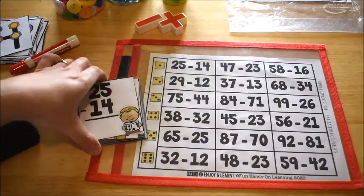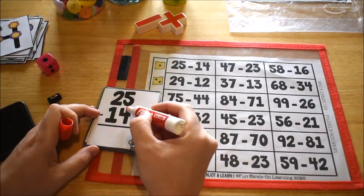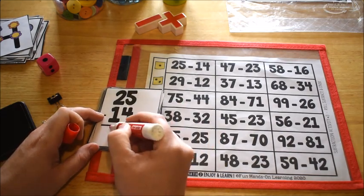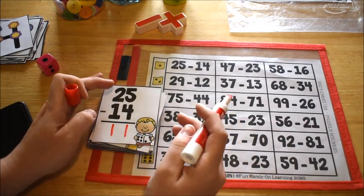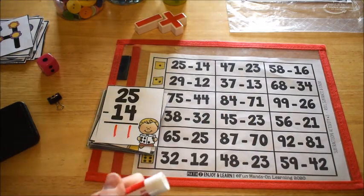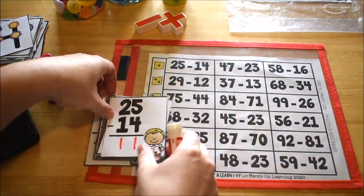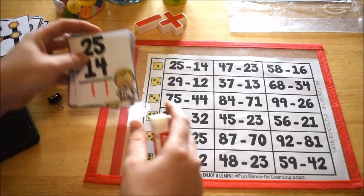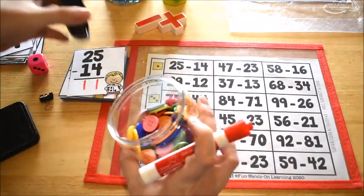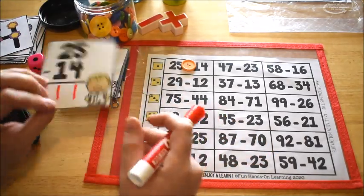Once you find the card, then the student will subtract. Five minus four is one, 20 minus 10 is 10, so 25 minus 14 is 11. Once they have their answer written down, I'm using a dry erase marker because these are laminated. Then they can use any manipulative you want. I'm going to use buttons and they're going to cover up that problem because they have completed it.